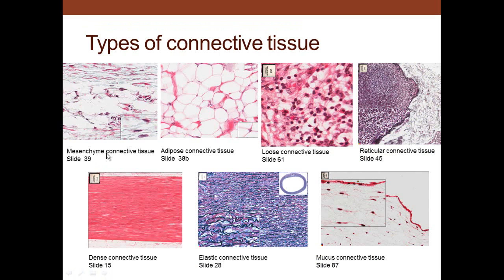Mesenchymal connective tissue contains fibroblast-like cells with a nucleus and little cytoplasm. Fat cells look like chicken wire with a nucleus and a white fat droplet inside. Loose connective tissue has lots of cells and few fibers. Reticular connective tissue has reticular fibers. Dense regular connective tissue has lots of fibers and cells lined up in a straight line, as in tendons and ligaments. Elastic connective tissue contains elastic fibers found in blood vessels, especially arteries. Mucus connective tissue is a light connective tissue.